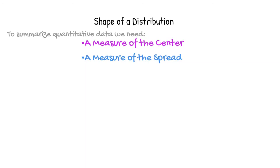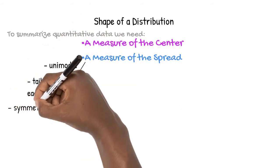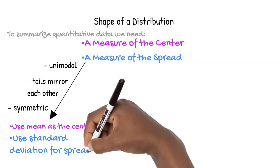But for now, let's make sure we know how to select the appropriate measurement to calculate when presented with a set of data. If we display our data in a histogram or stem and leaf and find that our data is unimodal, the tails mirror each other and the data is symmetric, it is ideal to use the mean as our center and the standard deviation for spread.